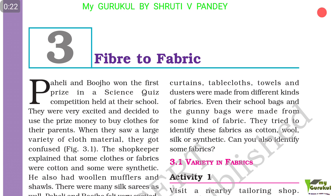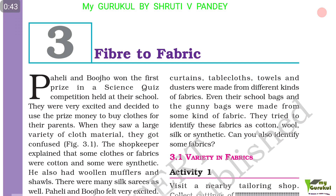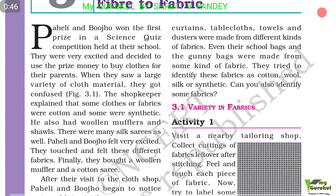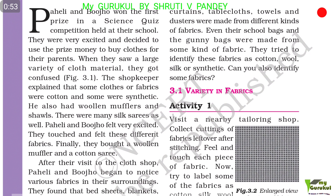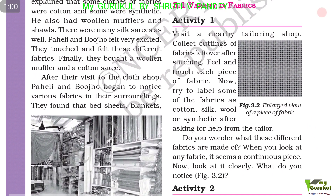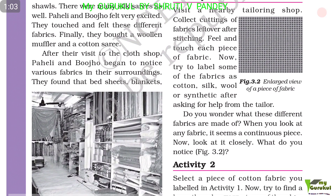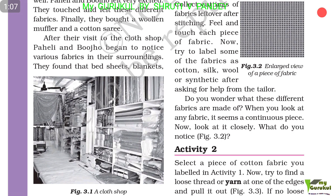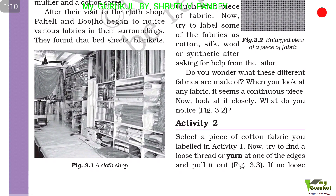Paheli and Bujo won the first prize in the science competition held at their school. They were very excited and decided to use the prize money to buy clothes for their parents. When they saw a large variety of cloth material, they got confused. The shopkeeper explained that some fabrics were cotton and some were synthetic. He also had woolen mufflers, shawls, and silk sarees. Paheli and Bujo felt very excited — they touched and felt these different fabrics, and finally bought a woolen muffler and a cotton sari.